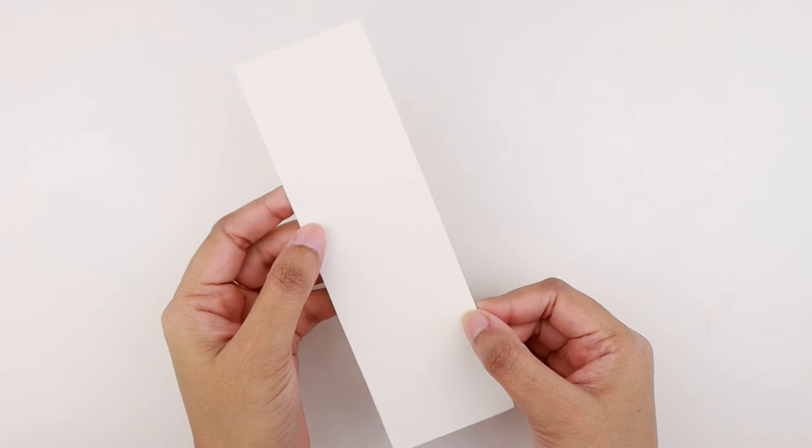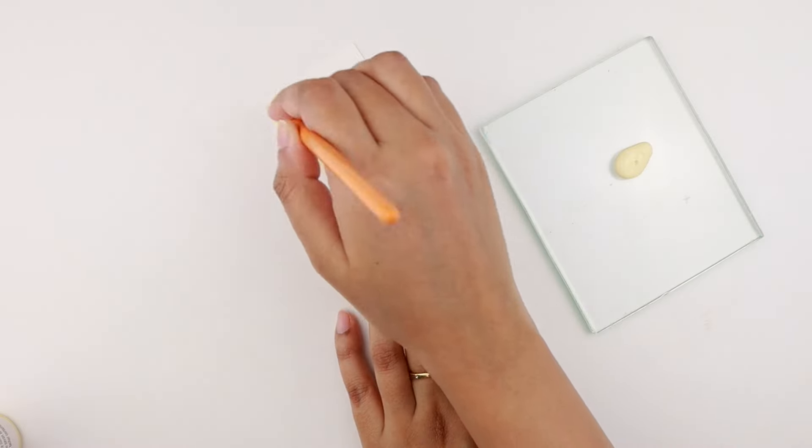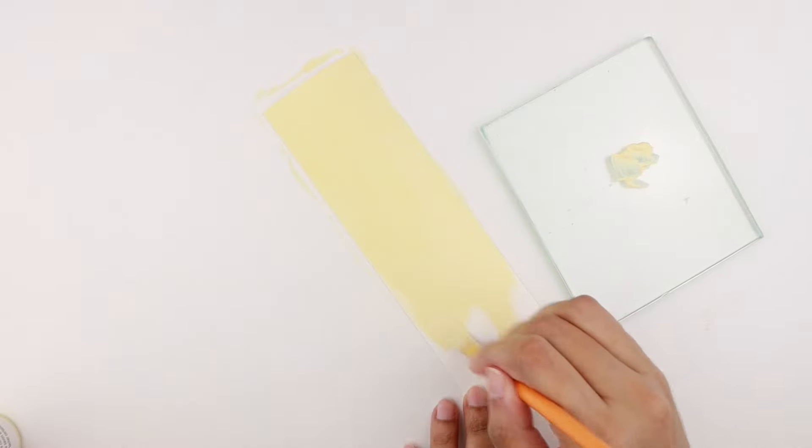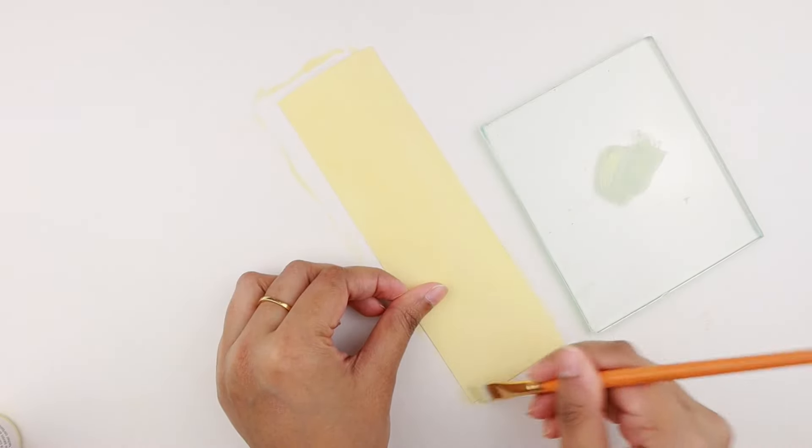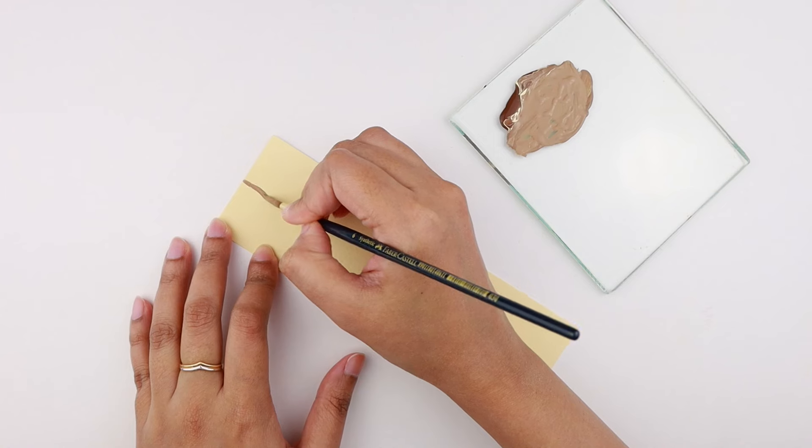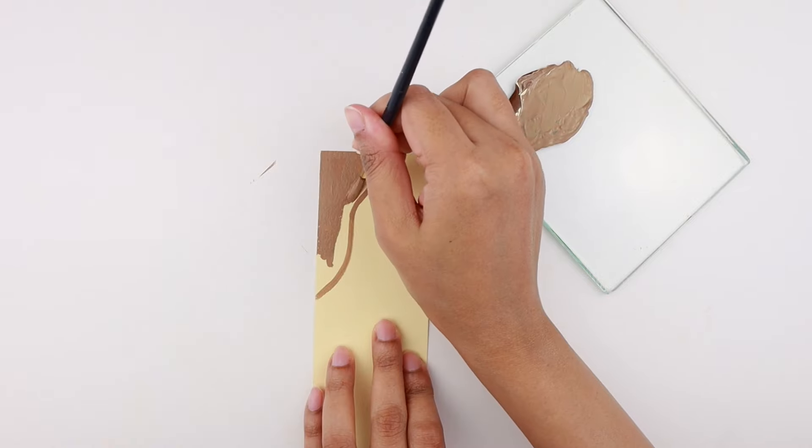For the next DIY, I cut out this rectangular piece of white cardstock. Using vanilla acrylic paint, I'm painting the entire paper. I'm planning to go for two coats for a better finish. Using light brown paint, I'm painting a blob at the top like so. Then I'm going ahead and filling in the shape.